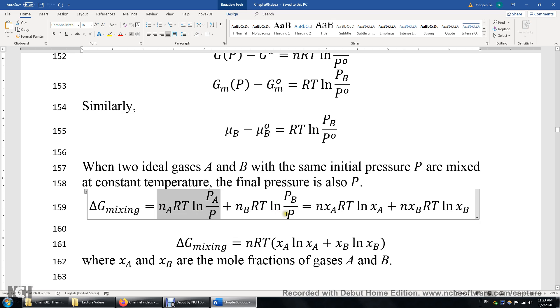And then we have the initial pressure of B which is P. The final pressure of B which is P sub B, this is the partial pressure in the mixture. And then we have this equation. This equation gives us the Gibbs energy change of B.